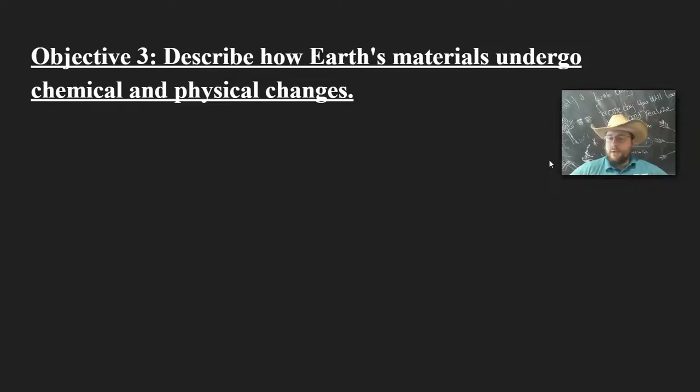So this is part three of the Earth Materials and Systems tutorial series. Objective 2 was quite long because we had several different types of processes to discuss, and we also had to talk about the energy behind them. These processes were mostly review of things we've learned in other content assessments for the year, and that's why it was long, because we had to review a lot.